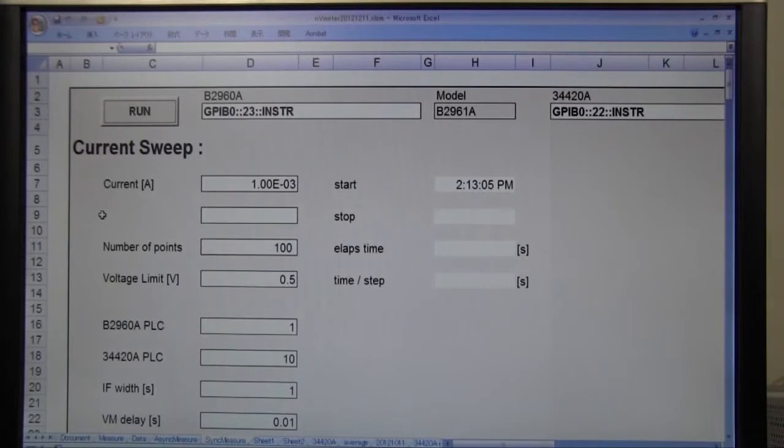Now let's repeat the ohm measurement and plot the measured resistance value. Force current is set to 1 milliamp and the integration time is set to 10 PLC. Let's start the measurement.